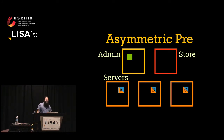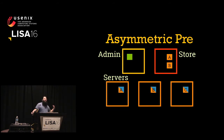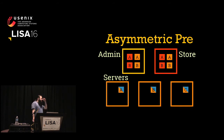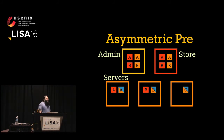In asymmetric pre-encryption, we have key pairs already generated on each machine. We retrieve the public keys and generate a separate asymmetrically encrypted copy for each machine. We put the encrypted copies on some kind of storage system — we don't really care who has access because they're opaque to anyone without the private key. A and B use their private keys to decrypt back to the original secret; C can download A or B's copy but can't decrypt it.